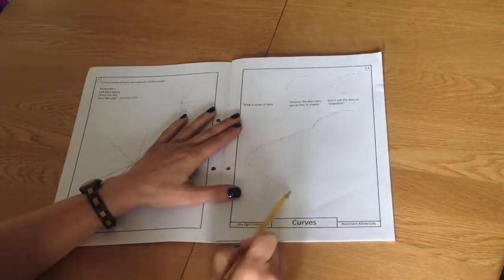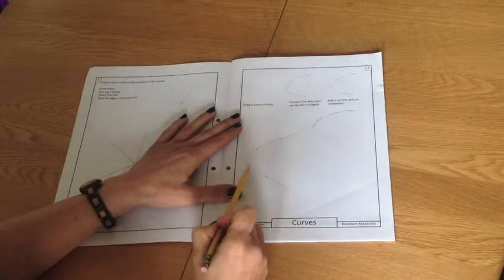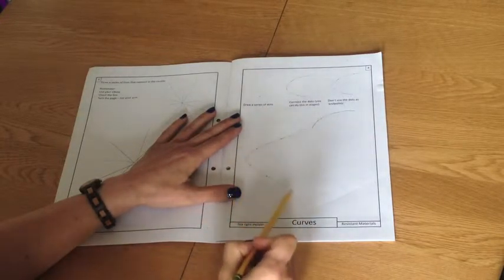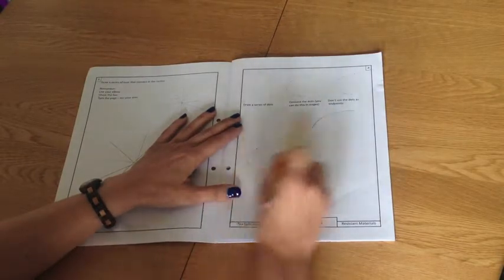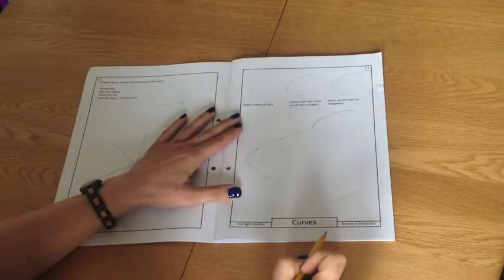And you can see here it starts before, it ends after, and none of these dots have been used as points to be the end of a line. It's just a straightforward curve. Now you want to do at least two of these, but obviously you can do more on the page if you need more practice.